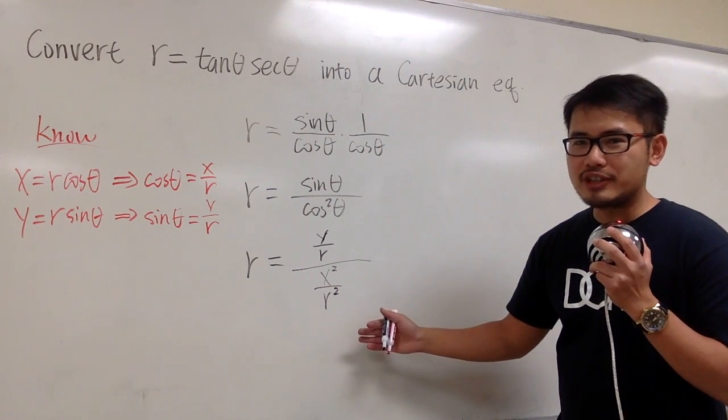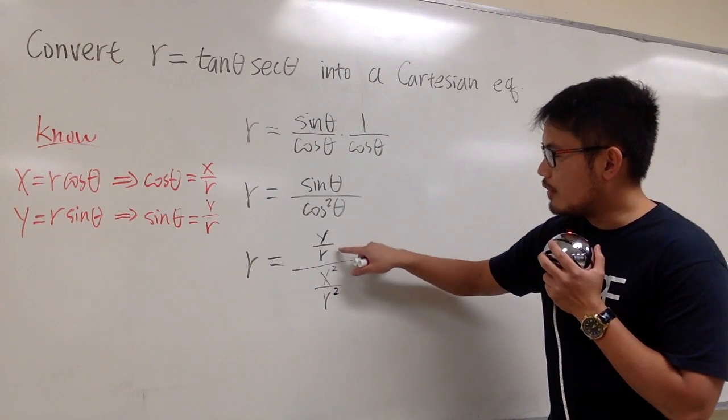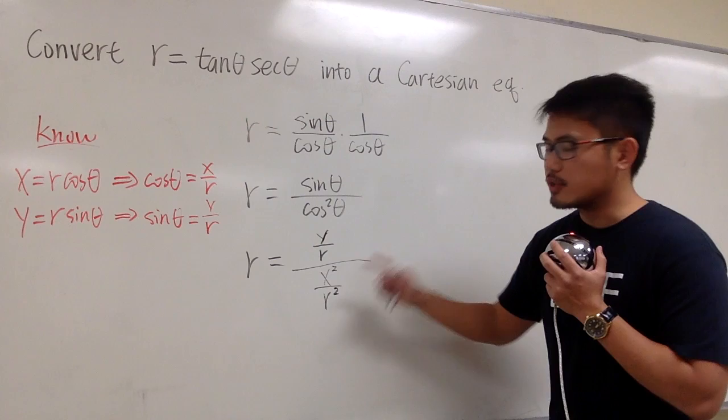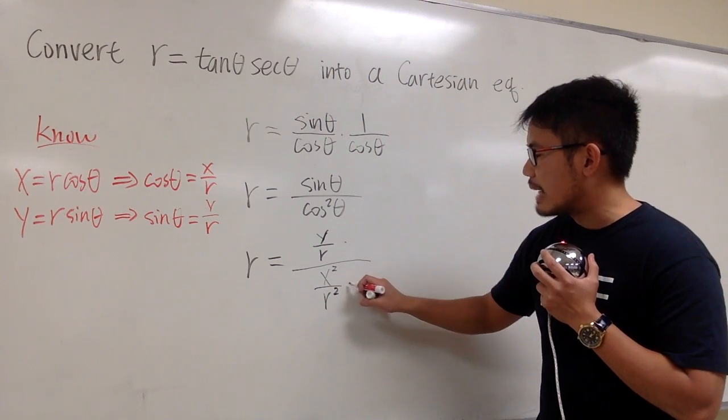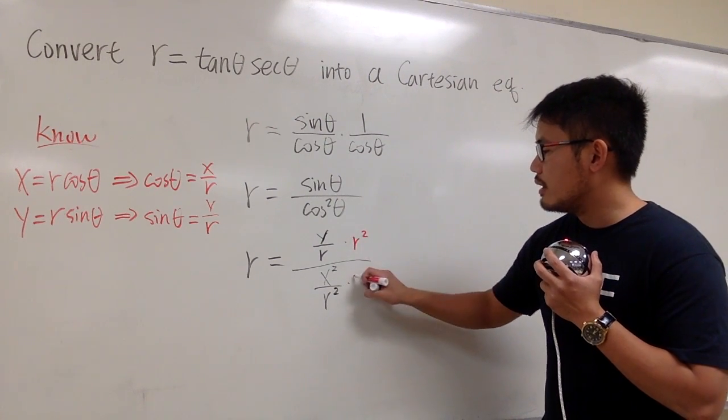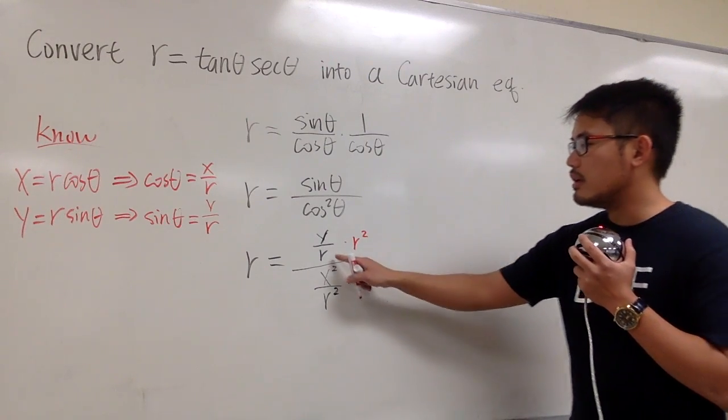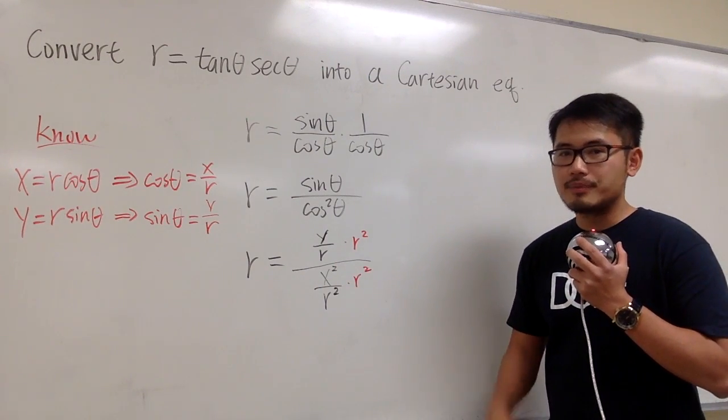This is a complex fraction. You see, you have y over r over x squared over r squared. Let's do this. Let's multiply the top and bottom by r squared, the lowest common denominator for the little fractions.